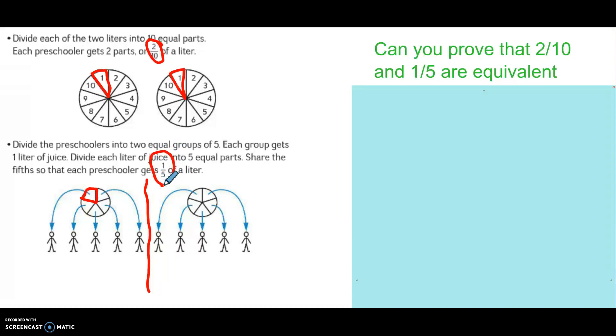So the two different ways we solve the problem, we got two-tenths and we got one-fifth. Can you prove that two-tenths and one-fifth are equivalent?